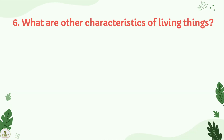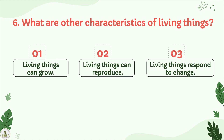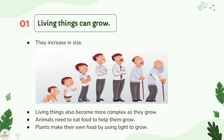What are other characteristics of living things? Living things can grow, reproduce, and respond to change. Living things can grow — they increase in size. Living things also become more complex as they grow. For example, when babies grow into toddlers, they have more hair and longer legs and arms. Animals need to eat food to help them grow. Plants make their own food by using light to grow.